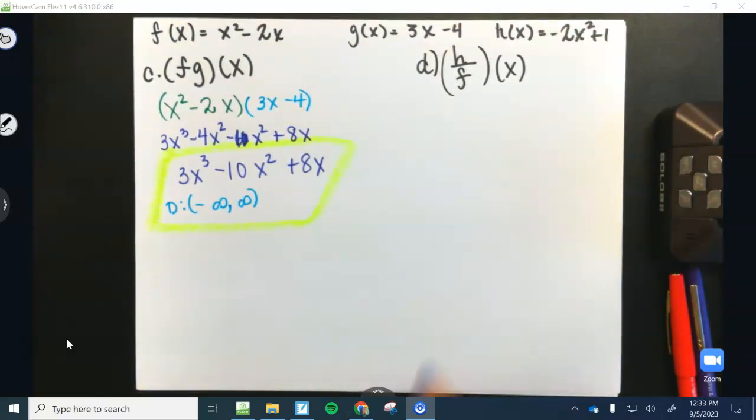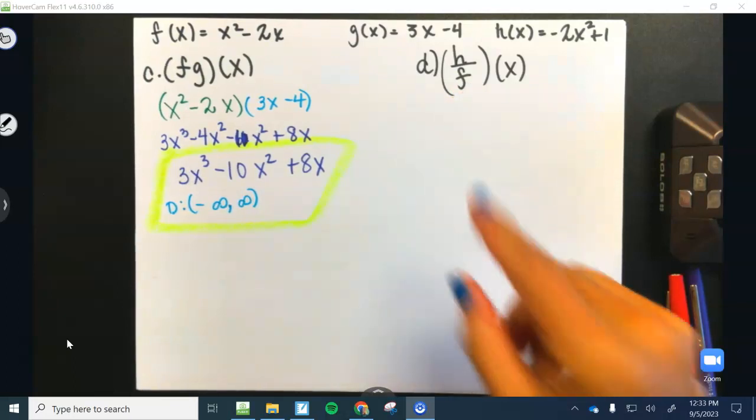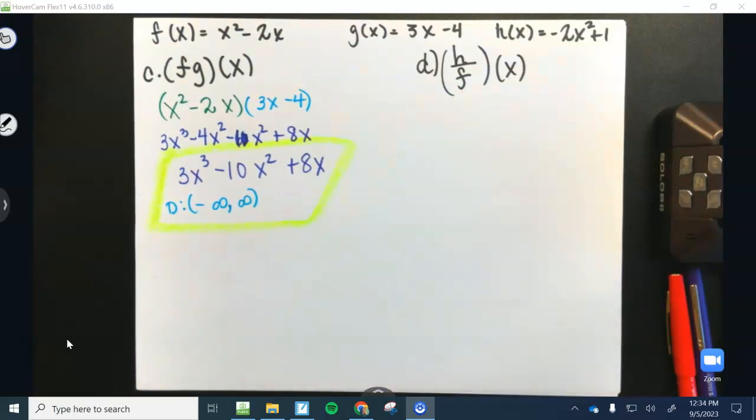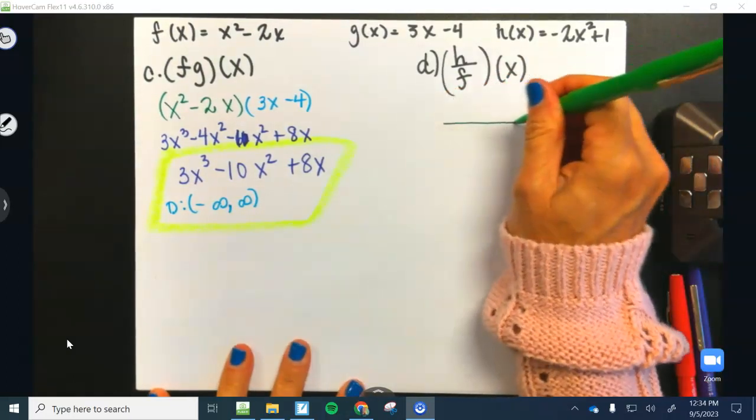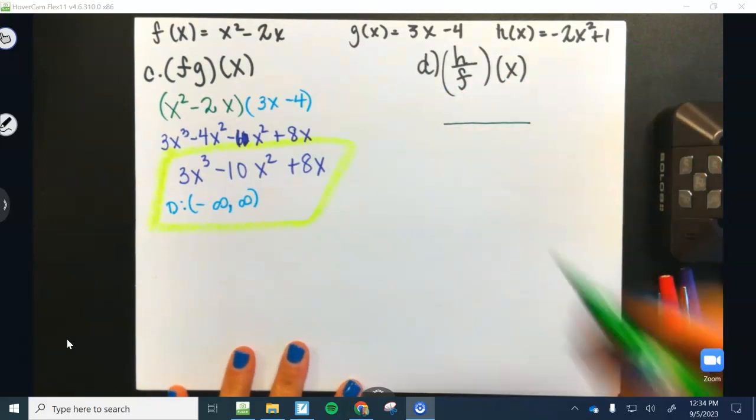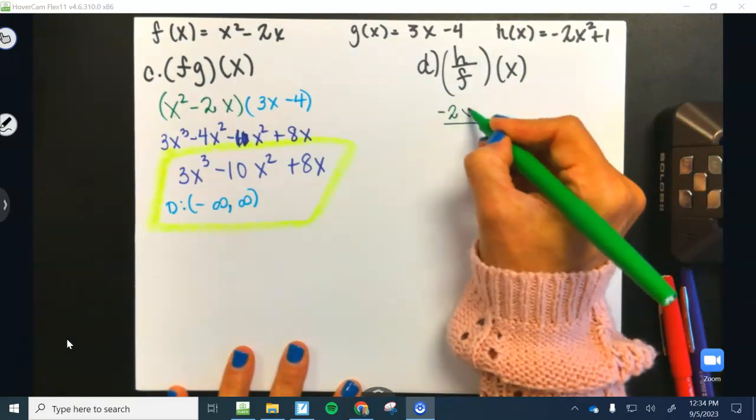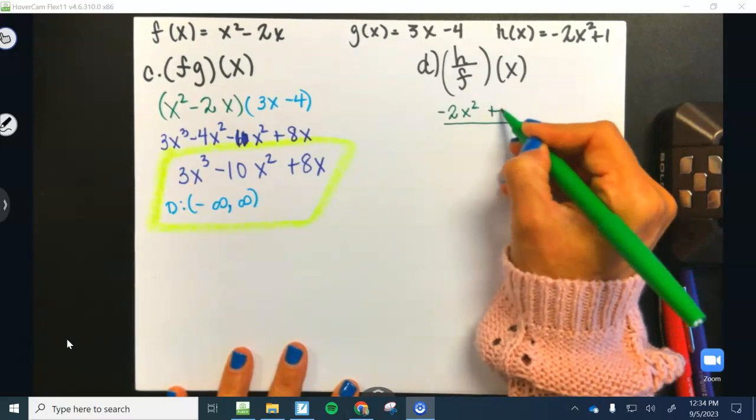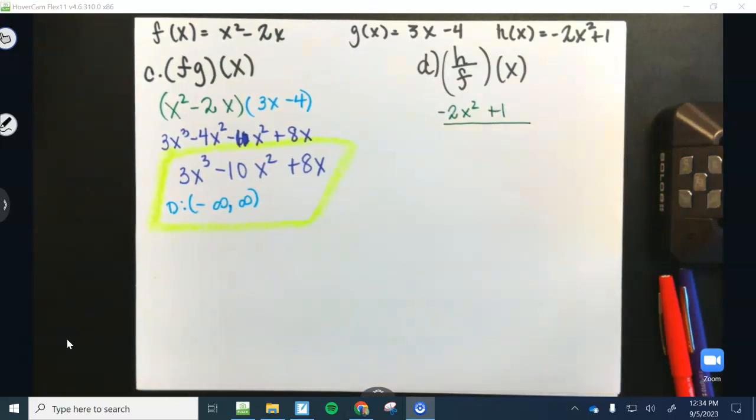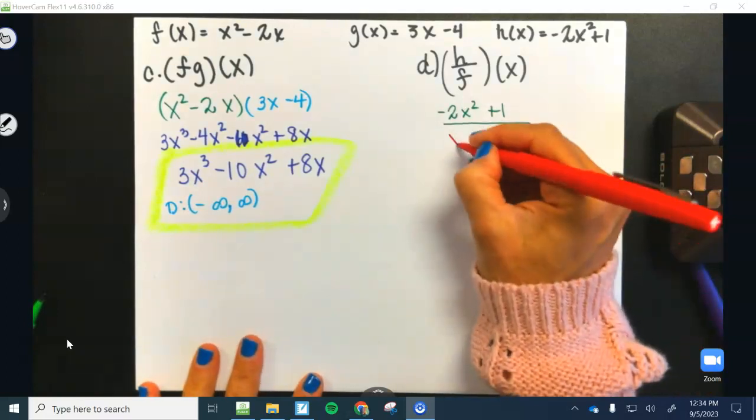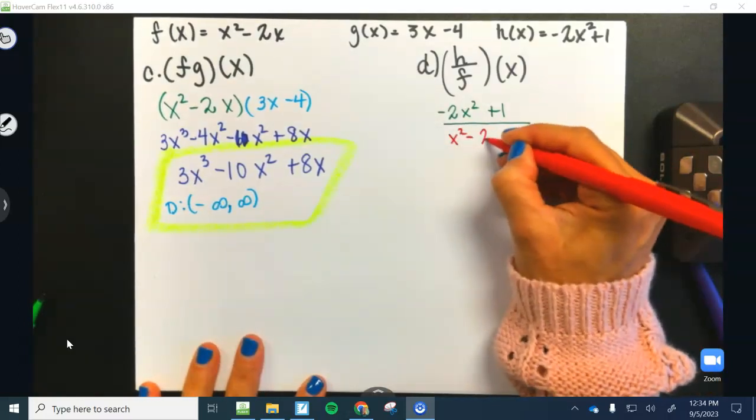Okay, so just remember, the denominator cannot equal 0. Let's see what this ends up looking like. So I'm going to draw a fraction bar. We're going to put h on the top, which is negative 2x squared plus 1. Okay, and then F is over there at the beginning of my paper. So this is going to be x squared minus 2x.